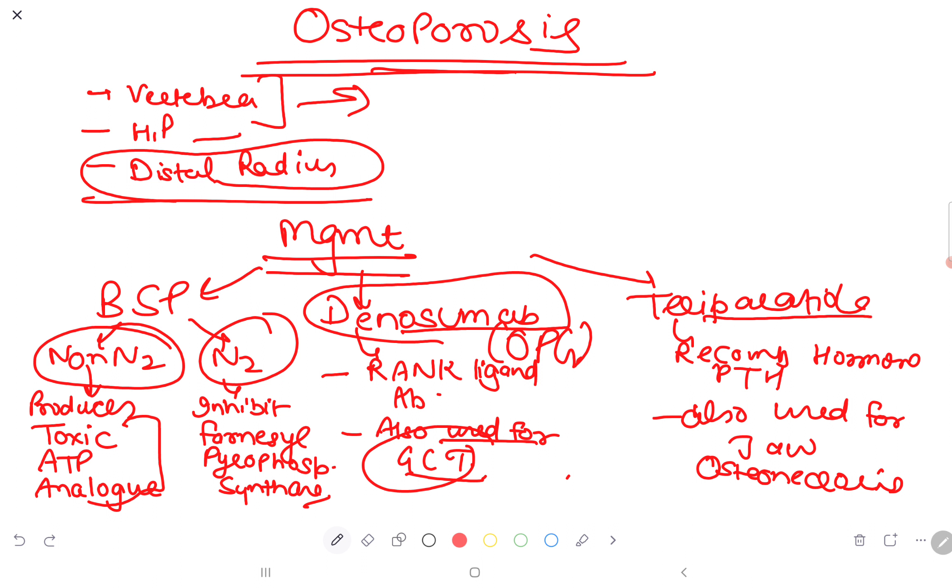Then we also have teriparatide, which is recombinant parathyroid hormone, also used for jaw osteonecrosis. Whereas bisphosphonates and denosumab can cause jaw osteonecrosis as a side effect, teriparatide is used for treatment.